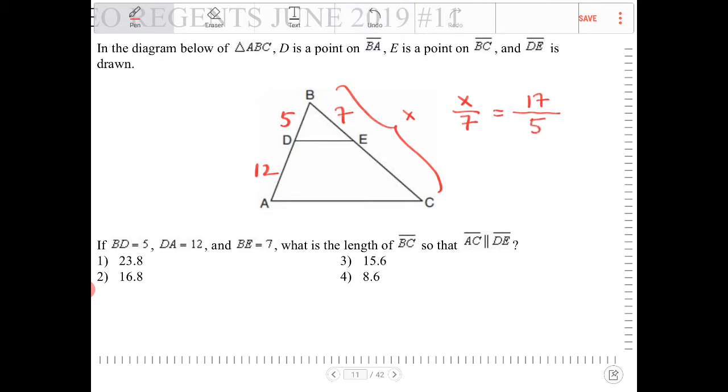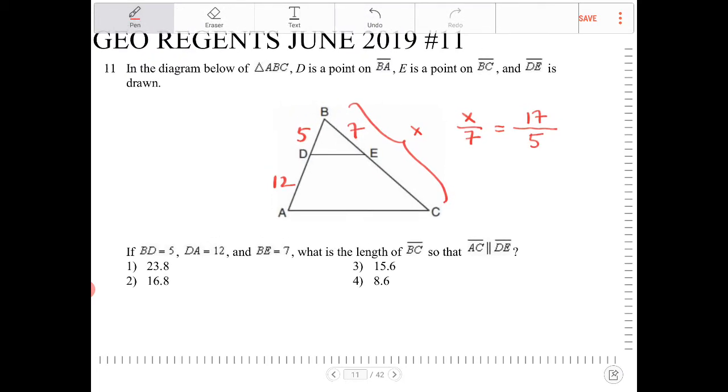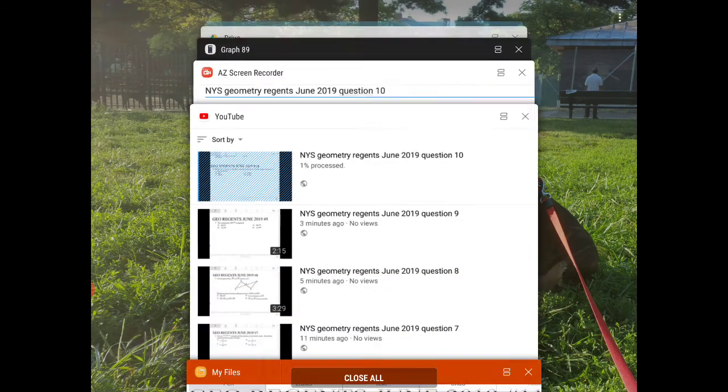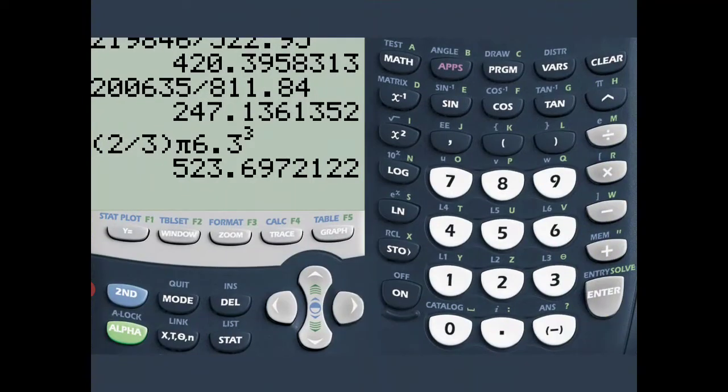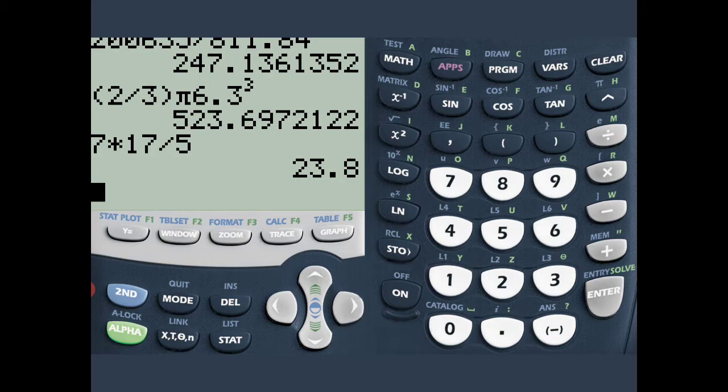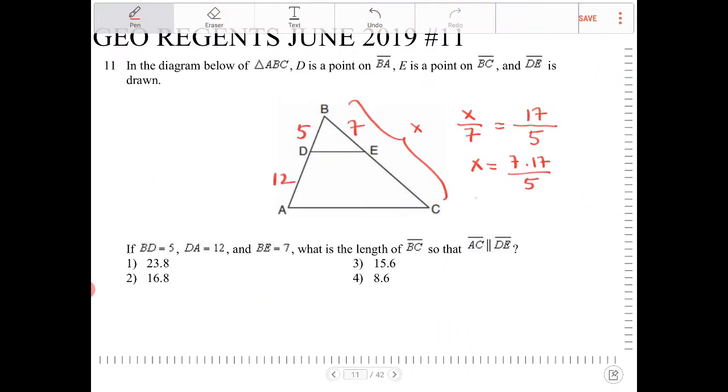So now we're going to cross multiply, and we're going to isolate X. So X will therefore equal to 7 times 17 over 5. And what would that be? 23.8.